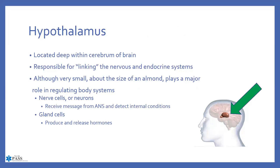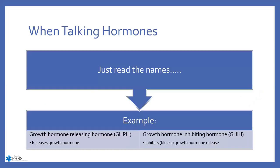The hypothalamus is deep within the cerebrum — the functional part of the brain — and it links the nervous and endocrine systems together. It can have nerve cells and gland cells for the purpose of hormones. It's a key player in regulating body systems, and it's only about the size of an almond, yet it plays an enormous role in regulation of both nerve and gland cells.